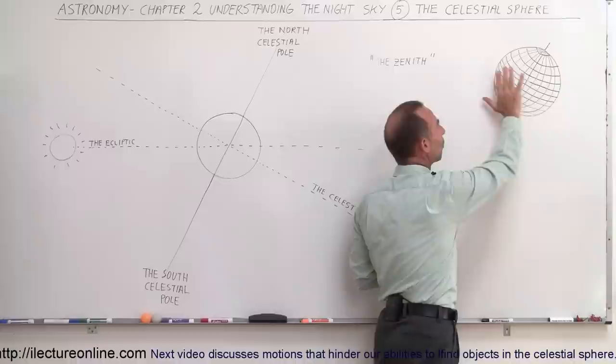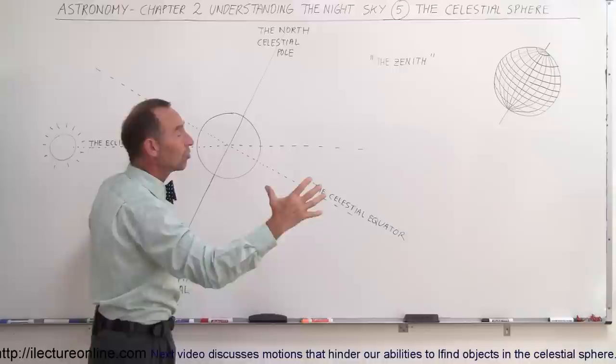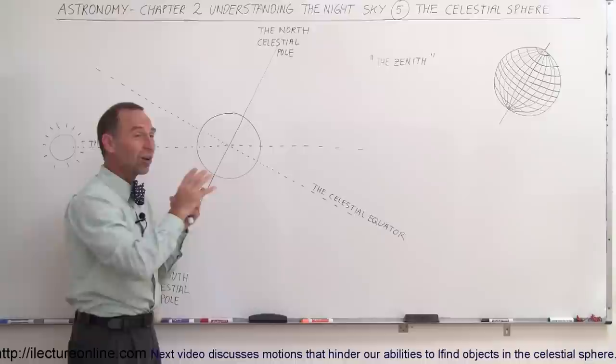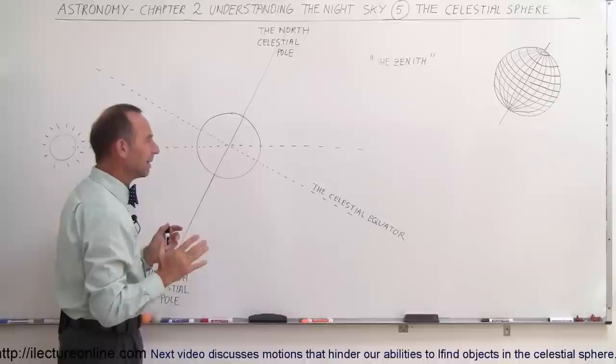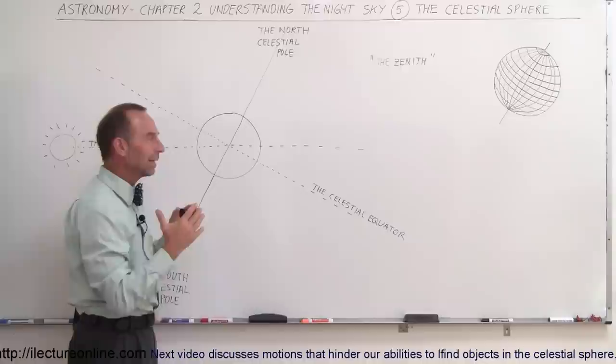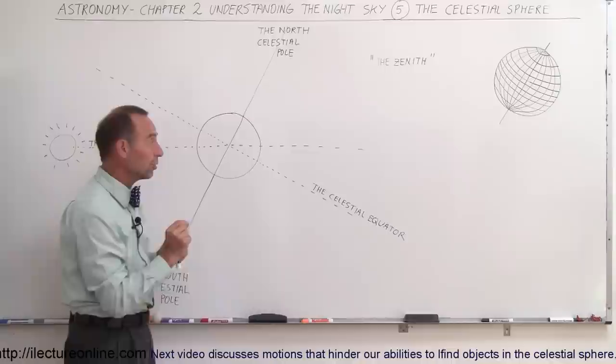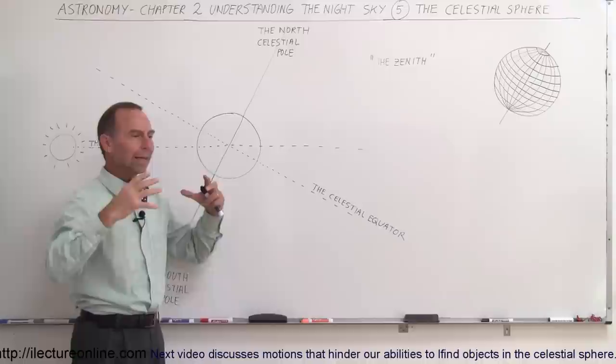In astronomy, we've wanted to do the same thing, but with the entire universe. There's one problem: the location from which we observe the universe — the Earth — is always constantly moving. It is rotating, it's going around the sun, it wobbles. The wobble and change of tilt is so slow we can pretty well ignore it over a typical decade or lifetime. So the two most important motions are the Earth rotating and revolving around the sun, which makes a coordinate system of the universe kind of difficult to figure out.